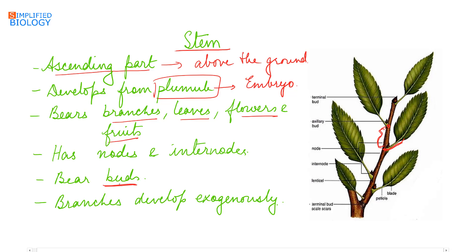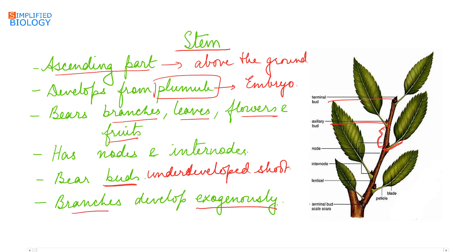Buds are underdeveloped shoots that have tender leaves in them. Buds are of two types: axillary bud and terminal bud. Branches develop exogenously, that is, from the outer part of the stem.